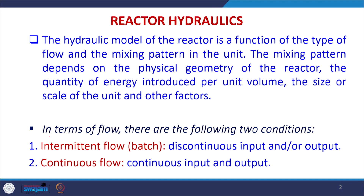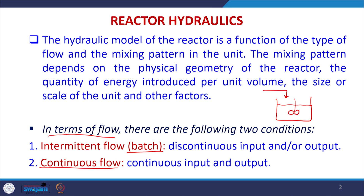In terms of flow, we can characterize systems into two categories: either batch or continuous. In intermittent flow or batch, we have discontinuous input and/or output. In a simple batch process, we have a reactor in which initially the reactants or wastewater flow in and remain inside the reactor until treatment happens for a certain period of time, which depends upon the hydraulic retention time. After treatment the wastewater will be taken out.